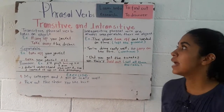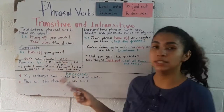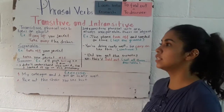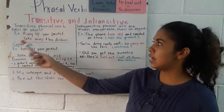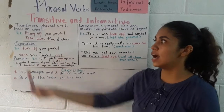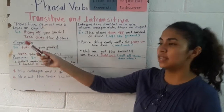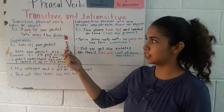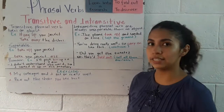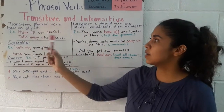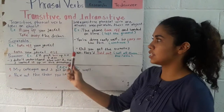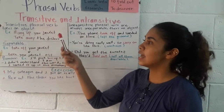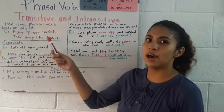A transitive phrasal verb takes an object. Here we have an example: 'Hang up your jacket.' Hang up is the phrasal verb and jacket is the object. Another example is 'Take away the dish.' Take away is the phrasal verb and dish is the object.